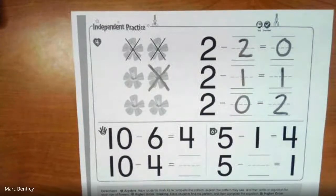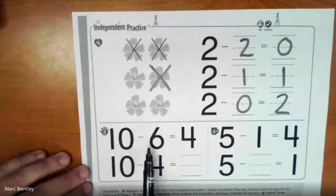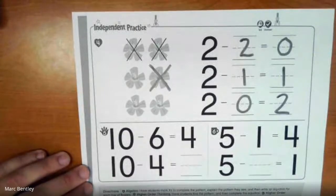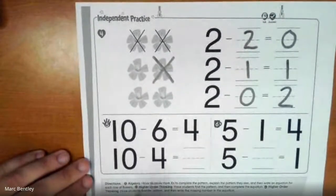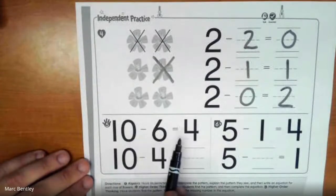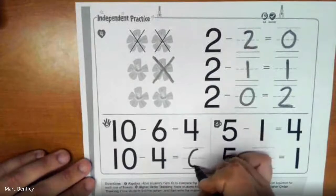So what we have to do here is find out what the pattern is. And then complete the equation. So for the first one, it already tells us that 10 minus 6 equals 4. So we know that already. It's asking us to find out what 10 minus 4 is. Now if 10 minus 6 equals 4, that means that 10 minus 4 must equal 6.